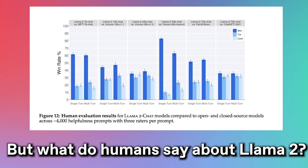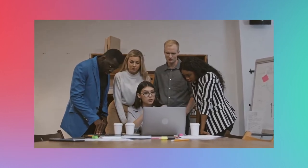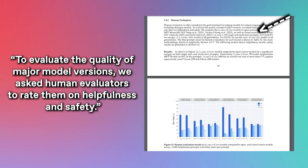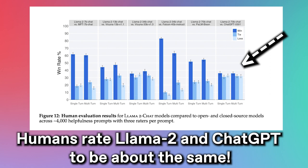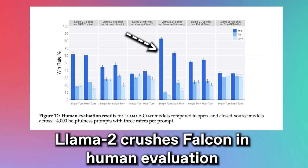The juicy part is the human evaluation of Llama 2 Chat in section 3.4.2. Human evaluation is considered the gold standard for judging natural language generation models. Meta asked human evaluators to rate models on helpfulness and safety. Llama 2 Chat outperforms open-source models by a significant margin in both short conversations and longer multi-turn prompts, and just barely wins against ChatGPT in helpfulness — though it does win more often.